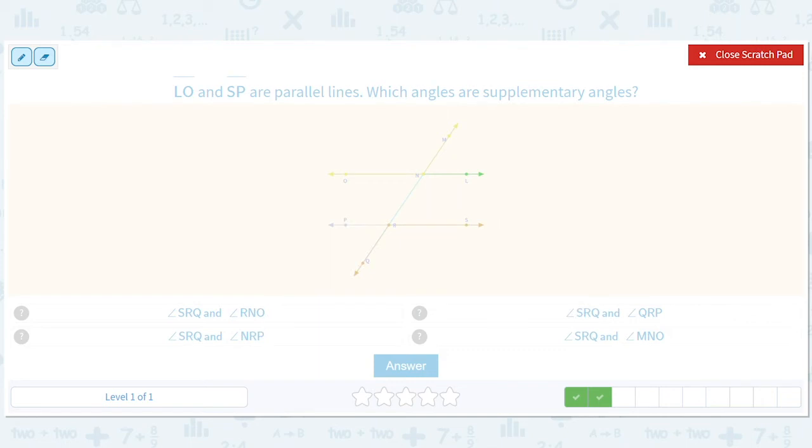Oh man. I forgot which ones. SRQ and RNO. SRQ and NRP. I said no. SRQ and QRP. Yes. And SRQ and MNO. So SRQ and MNO. No. Because that'll be like these two and those are not. Yeah. So it's the top two.